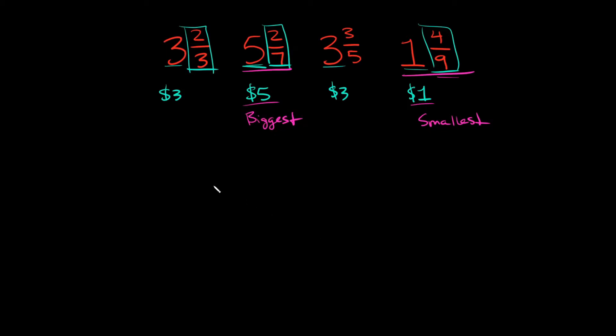Now, with the two that we have left, we have $3 plus some change and $3 plus some change. So we can't tell which one is bigger just by looking at their whole number because it's the same. So in this case, we have to compare their change. We have to compare their fractions. So we have to compare two-thirds and three-fifths. So let me write them down here. So we're going to compare two-thirds and three-fifths.